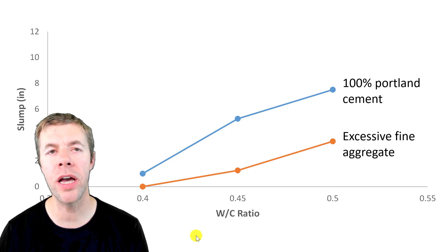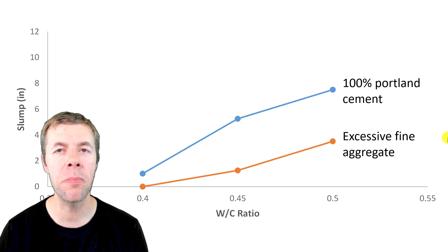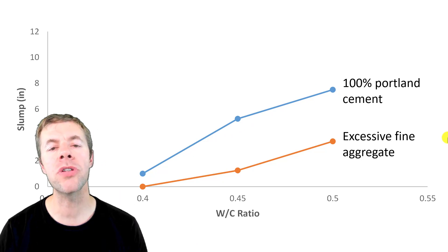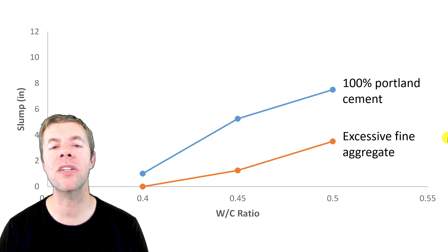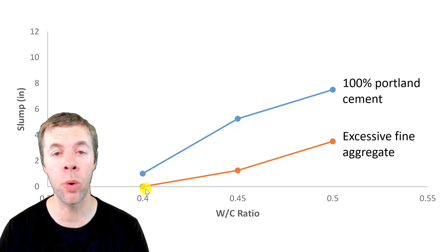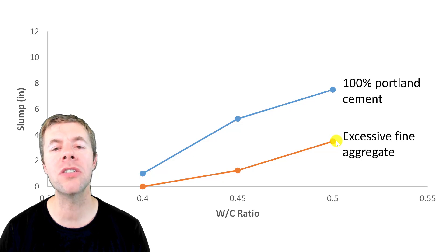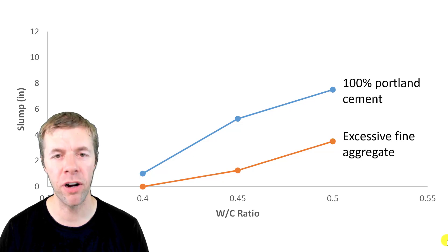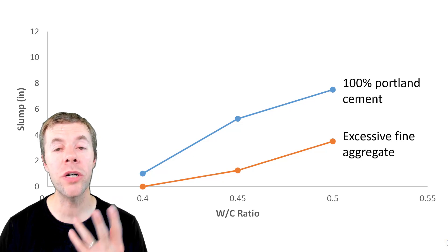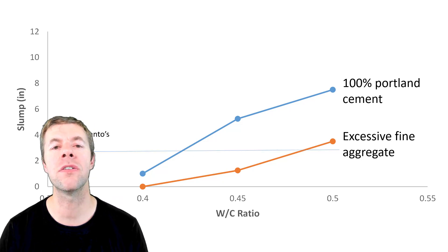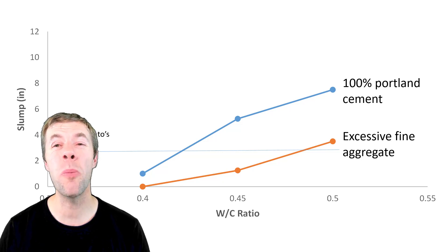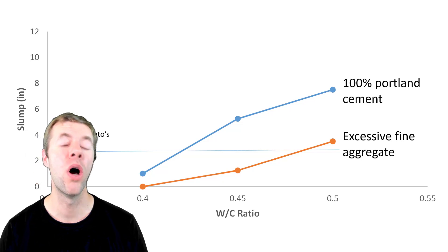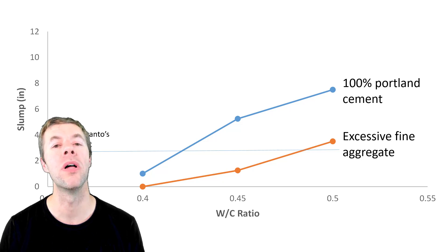In this plot, we're showing water to cement ratio again on the x-axis, slump on the y-axis. The blue line is a mixture in the middle of the tarantula curve, 100% Portland cement. But if I have excessive fine aggregate, I could drop the slump down to zero at a 0.40 water to cement ratio, about one and three quarters inch at 0.45, and just over two inches at 0.50. So for your question about two and a half inches of slump, we could get up to about a 0.48 water to cement ratio with excessive amounts of fine sand.